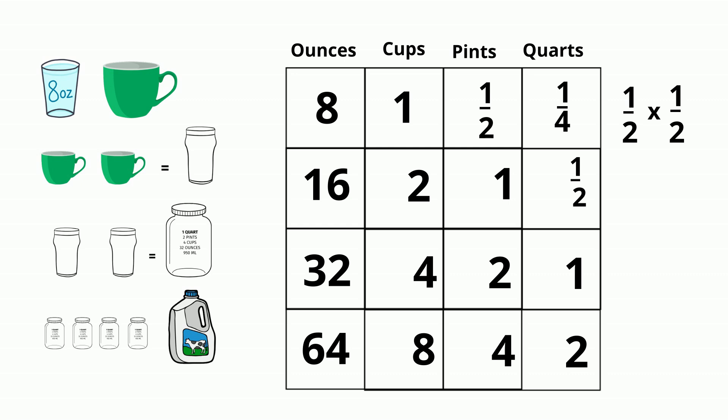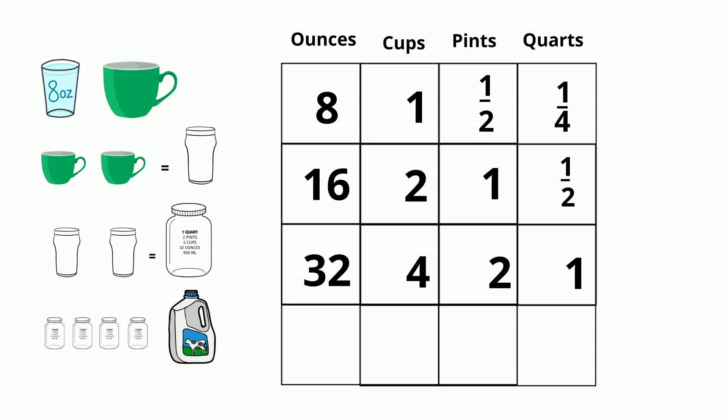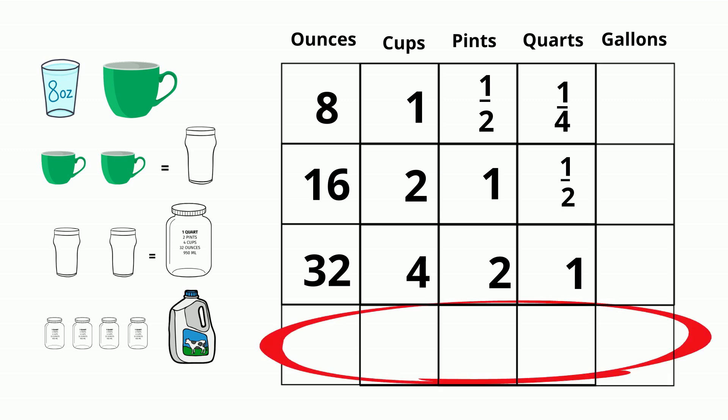Now, let's add gallons. So I'm going to add a column and a row. So let's start with 1 gallon. So what do we know? We know that 1 gallon equals 4 quarts.